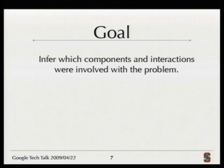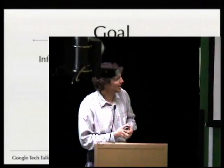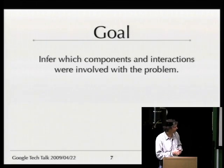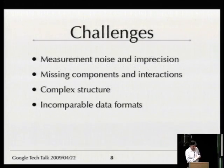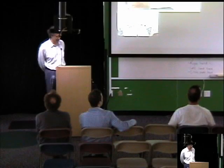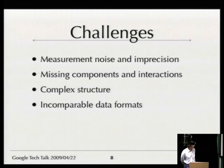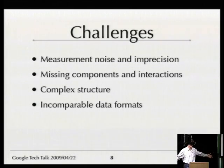So we're really interested in taking the system as it is with these constraints and trying to make more use of the available information coming out when there is a problem, to help diagnose those problems. The challenges are: measurement noise and imprecision, missing component interactions, very large and complicated systems, and data of different kinds and semantics from different components that we need to systematize.